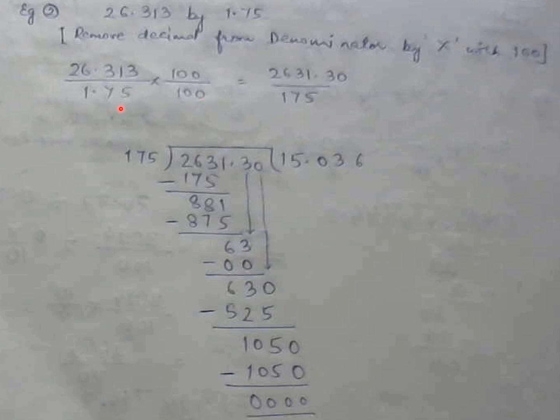Then you will multiply 1.75 with 100, you have to multiply 26.313 also with 100, so that the value of the fraction remains same. So the new digit formed is 2631.30 divided by 175. 175 ones are 175, subtracting it we will get 88. Now I will copy the next digit that is 1.